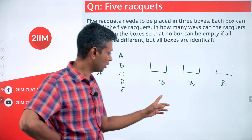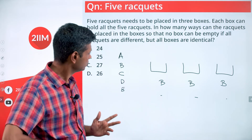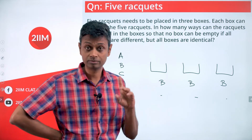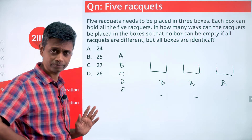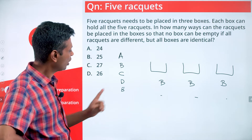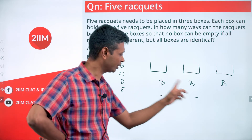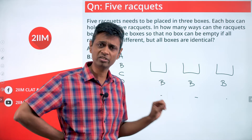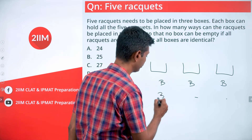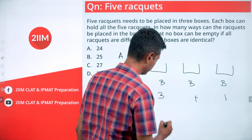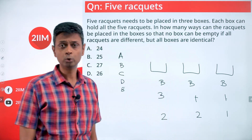Since the boxes are identical and each must have at least one racket, we start with one in each box — that accounts for three. We have two remaining. We can distribute them as one and one (giving 3-1-1) or both together (giving 2-2-1). So the partition types are (3,1,1) or (2,2,1).